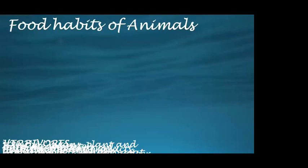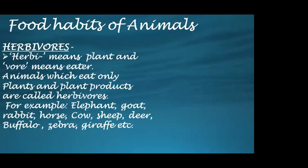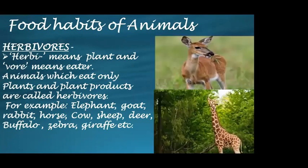Herbivores. The word 'herb' means plant and 'vore' means eater. Animals which eat only plants and plant products are called herbivores. For example: elephant, goat, cow, buffalo, rabbit, horse, sheep, deer, zebra, and giraffe — these are all called herbivores.